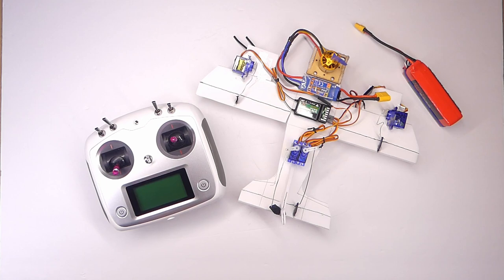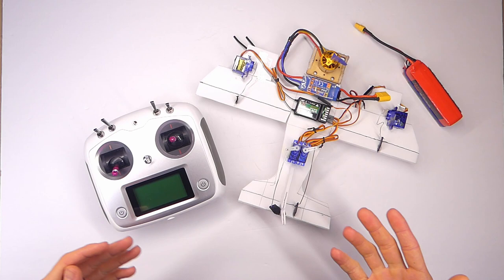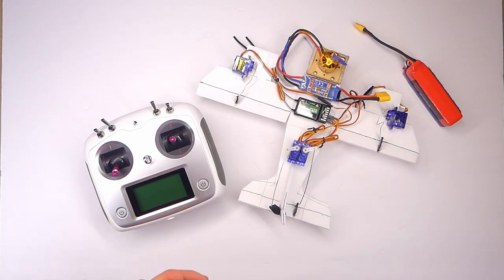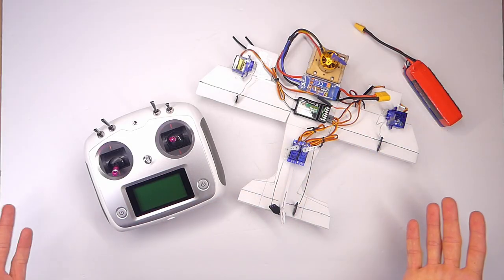My name is Adam and today I want to show you how to bind your FlySky FSI-6S transmitter with a receiver. In this case we're talking about the FSI-A6B receiver for an airplane, but basically the same concept applies to a quadcopter receiver.